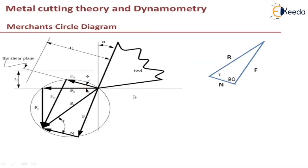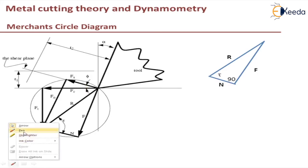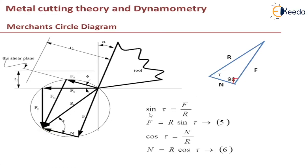Now let us take one more triangle with friction force F and normal force N. This angle is tau and this is 90, since normal is perpendicular to friction. So sin(tau) gives F equals r sin(tau) — equation 5. Cos(tau) gives N equals r cos(tau) — equation 6.